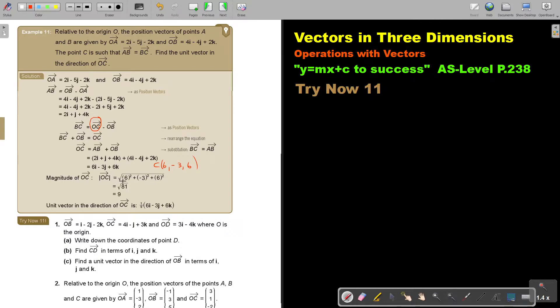The magnitude of OC is 6 squared plus negative 3 squared plus 6 squared, which is the square root of 81, and that's 9. Now to find the unit vector, it's 1 over 9 times 6i minus 3j plus 6k. I can leave it like that. This is a typical exam question.